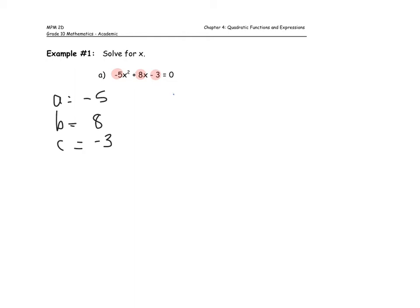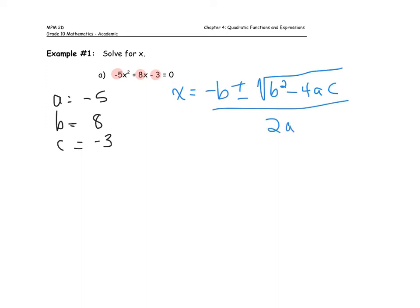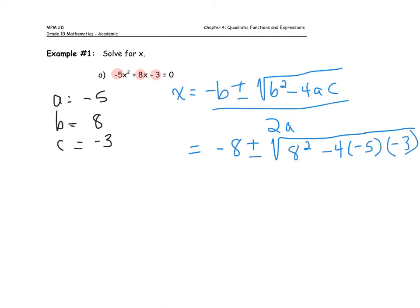So x is equal to negative b plus or minus the square root of b squared minus 4ac, all over 2a. Substituting: negative 8 plus or minus the square root of 8 squared minus 4 times negative 5 times negative 3, all divided by 2 times negative 5.